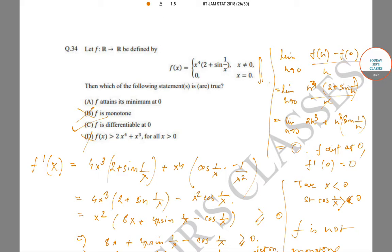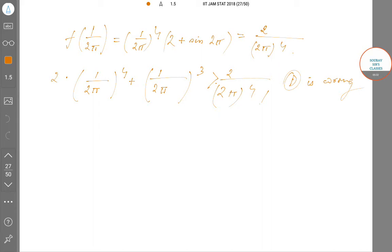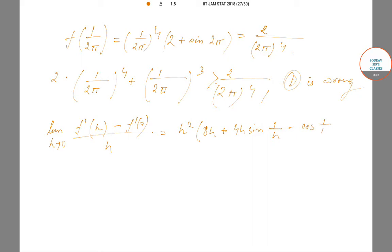So what is limit as h goes to 0 of [F'(h) - F'(0)]/h? This equals limit of h[8h + 4 sin(1/h) - cos(1/h)]/h.